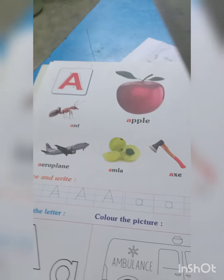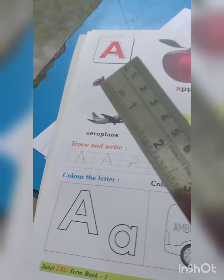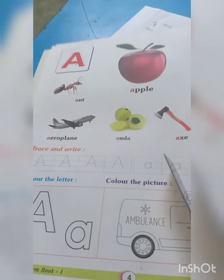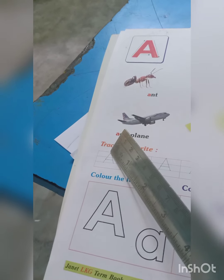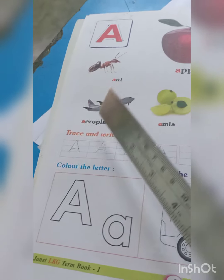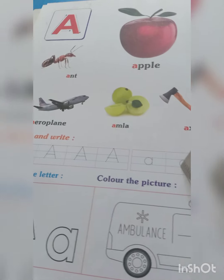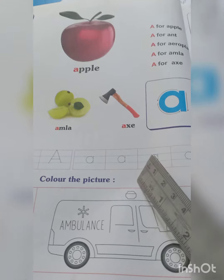So, this is the letter A. Trace here and write this — caps A, small a. Left slanting line, right slanting line, and one slipping line. Here, the A — you have to write one full curve and one straight line.